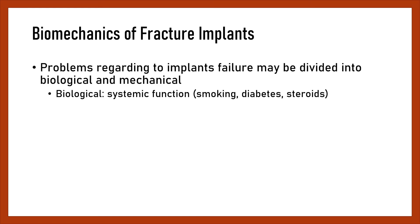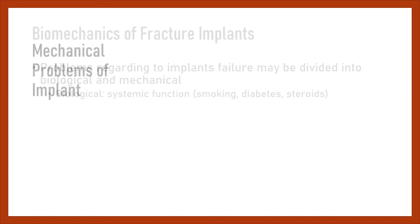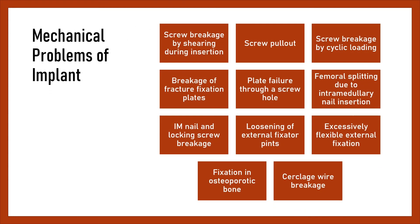Biomechanics of fracture implants: Problems regarding implant failure may be divided into biological and mechanical. Biological factors include systemic conditions like smoking, diabetes, and steroid use. Mechanical problems of implants include screw breakage by shearing during insertion, screw pullout, screw breakage by cyclic loading, breakage of fracture fixation plates, plate failure through a screw hole, cortical splitting due to intramedullary nail insertion, IM nail and locking screw breakage, loosening of external fixator pins, excessively flexible external fixation, fixation in osteoporotic bone, and cerclage wire breakage.